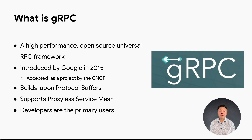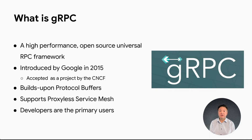Let's kick things off with an introduction to gRPC. First of all, it's a high-performance, open-sourced, remote procedure call framework. As an RPC mechanism, it's built to facilitate communications between your application components, such as microservices. Google originally introduced gRPC in 2015, based on a successful framework developed for internal purposes called Stubby. Because of their success with Stubby, Google decided it would be beneficial to create an open-sourced option, and thus gRPC was introduced. It was accepted as a Cloud Native Computing Foundation project in 2018.